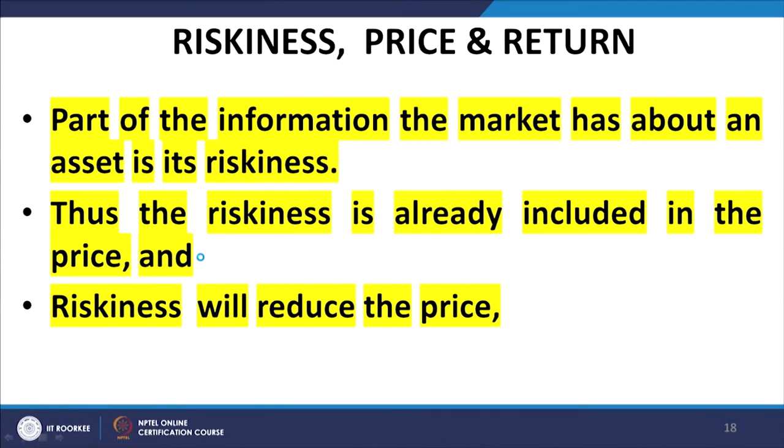Then we discussed the issue of riskiness, price and return. Given three assets which have the same final value but with different default probabilities — one being risk-free, the second being low risk, and the third being high risk — the asset with the least risk would be traded at the highest price and the asset with maximum default risk would be traded at the lowest price. Conversely, if three assets are being traded at the same price, the future value of the least risky asset would be lower and the future value of the most risky asset would be maximum.